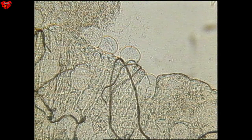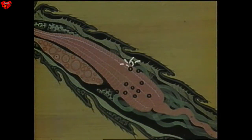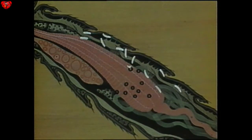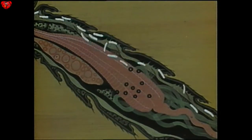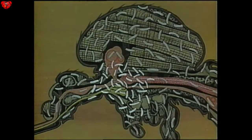After 10 to 12 days, the oocyst is mature and packed with sporozoites. This mosquito is carrying a very heavy infection. The oocysts rupture into the body cavity, and the sporozoites move through the body of the mosquito to enter its salivary glands.